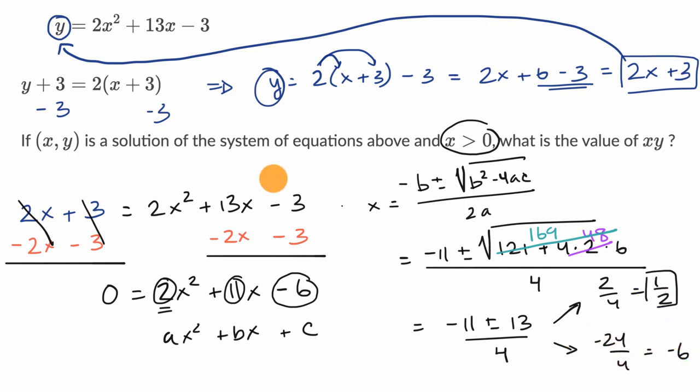Either of these X values would satisfy, would be the X coordinate of the point of intersection, but it tells us X is greater than zero. So we rule this one out. So we figured out the X value they care about.